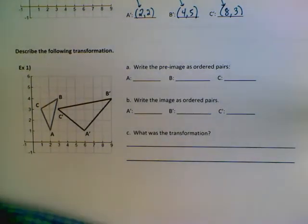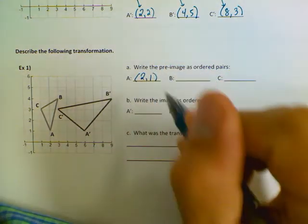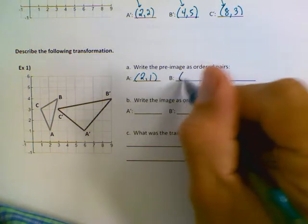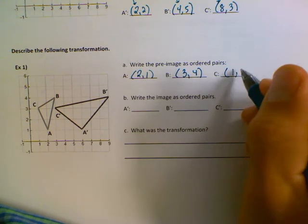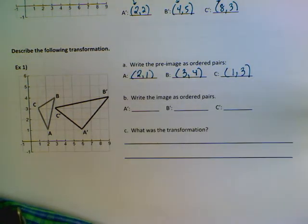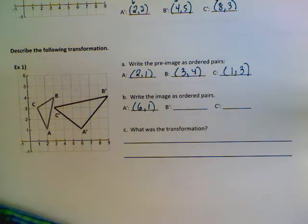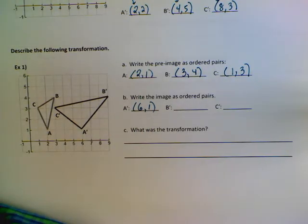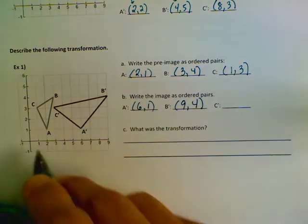Now walking down to example 1, we're going to write down our coordinates for A which are (2, 1), B is (3, 4), C is (1, 3). Now it doesn't actually tell us what the transformation is, so what we're going to have to do is write down these coordinates and see what the transformation is. B' was (9, 4), C' is (3, 3).